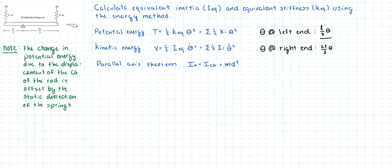Alright everyone, in this video we're going to calculate the equivalent inertia and equivalent stiffness of the system using the energy method. As you can see, we have only one degree of freedom, which is noted by θ.